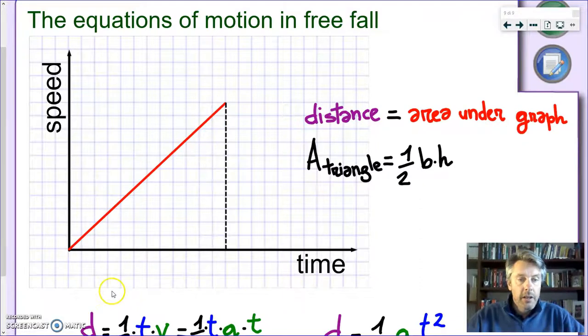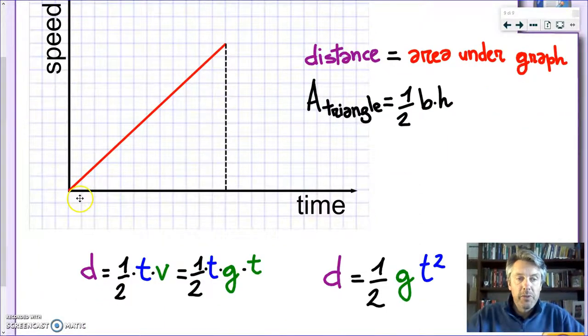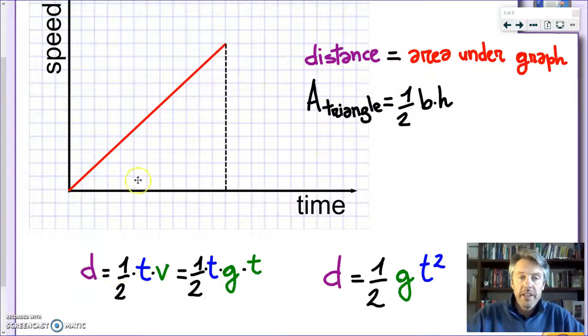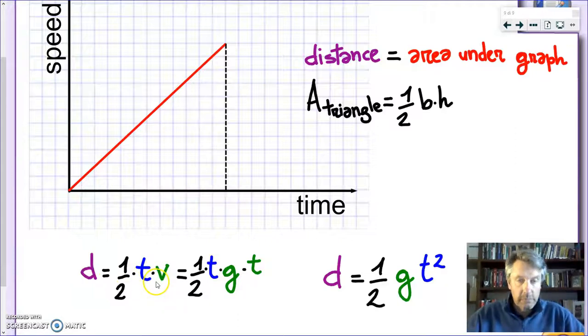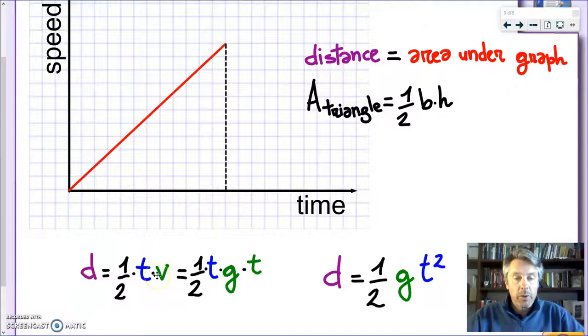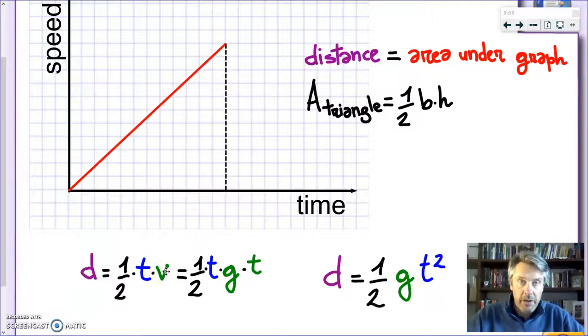But what are the base and the height in this case? Well, let's look at it. The base is obvious, that's from the formula of the triangle. The base is the time and what is the height here? It's the speed. So I'm rewriting D as one half times T times V but what is V? If you remember what we've seen previously the speed is given by the acceleration of gravity times the time. So it's one half times T times g times T.